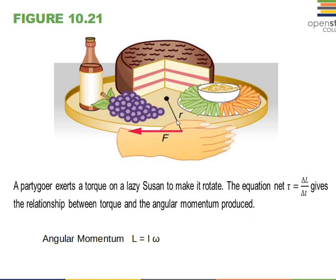Again, force and lever arm create torque. We corrected F equals ma and expressed it as F equals delta p over delta t — the net external force creates a change in momentum. There is an angular momentum we need to consider now, and a similar equation: torque equals the change in angular momentum divided by time. The angular momentum is calculated as I times omega — the rotational inertia multiplied by the angular velocity in radians per second.